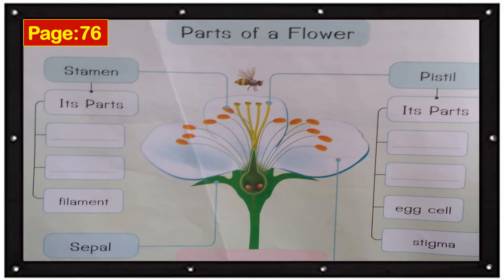This time, you have to open your book on page 76 and answer the following. You will write the parts of a flower, the parts of the stamen, and the parts of the pistil.